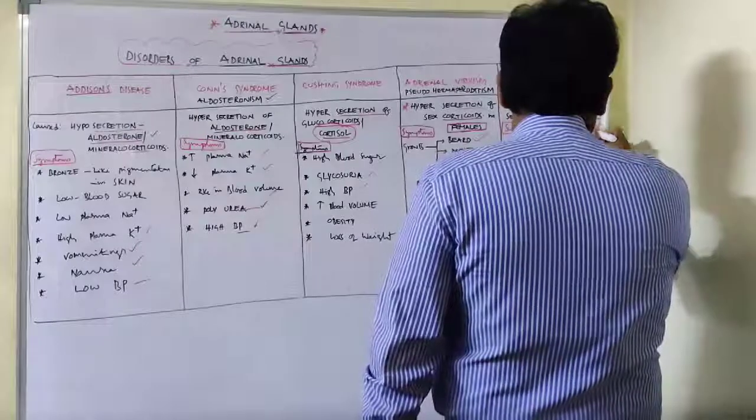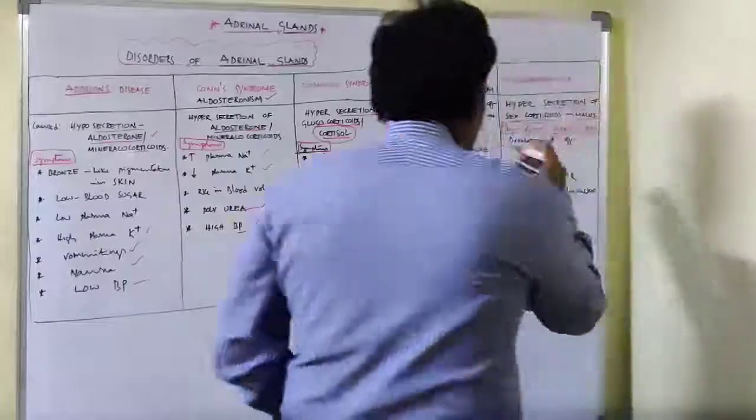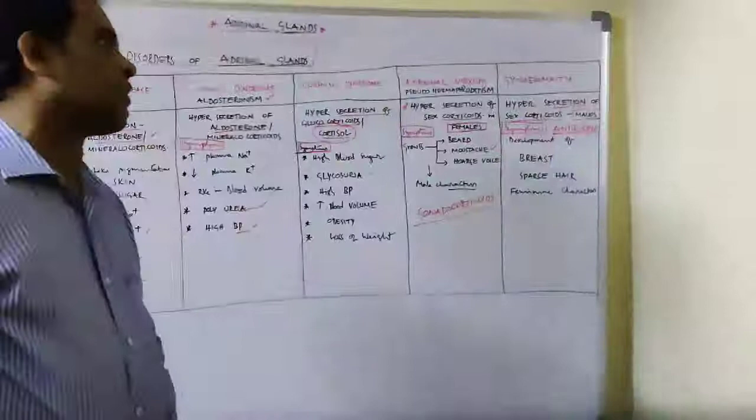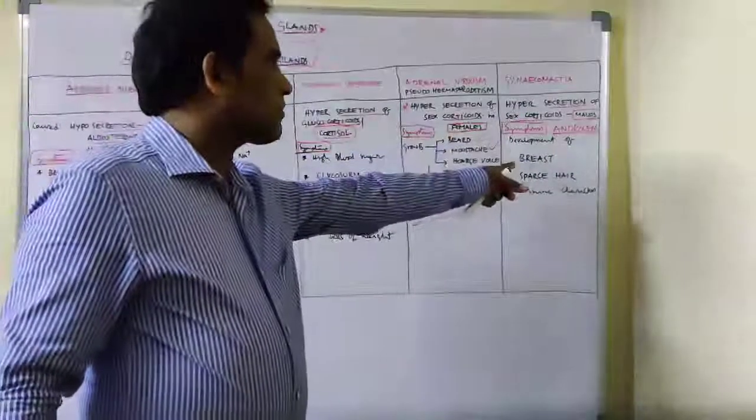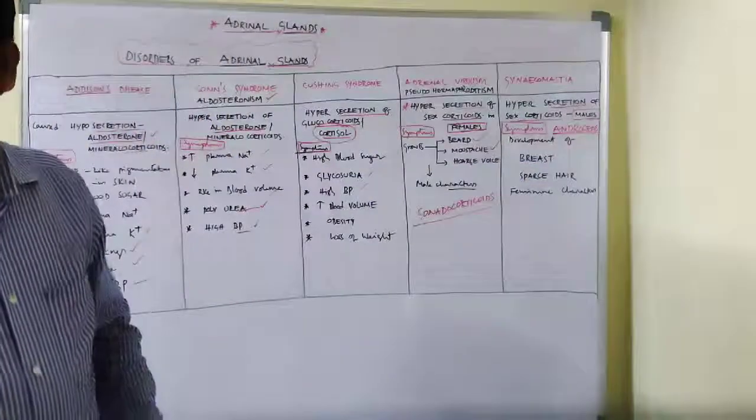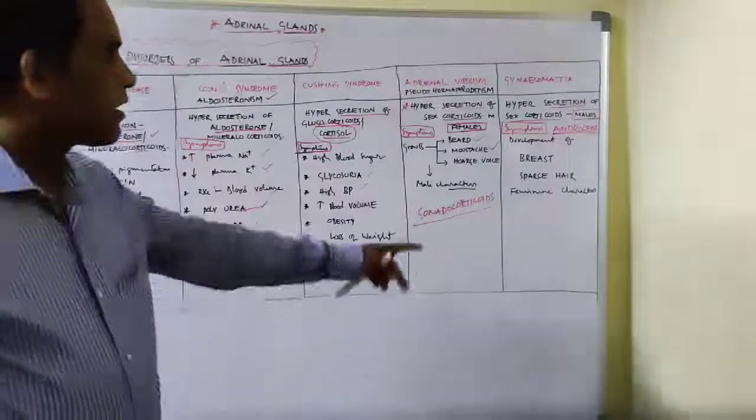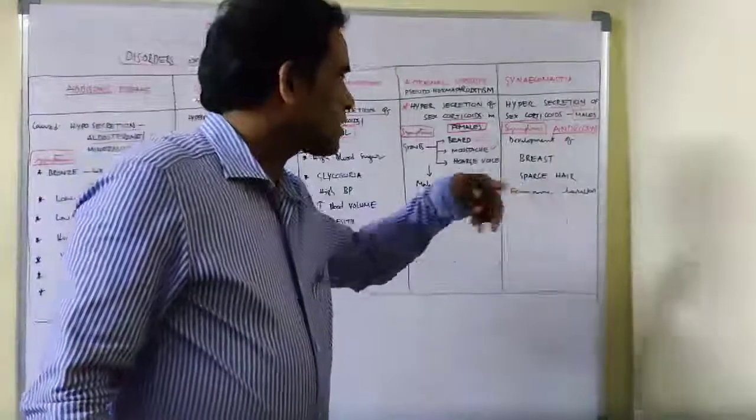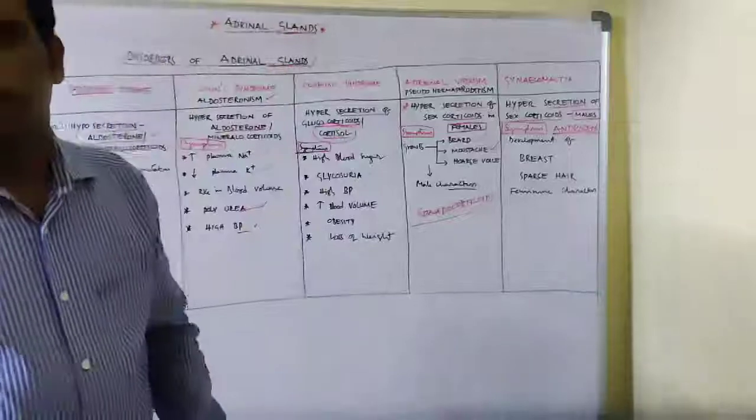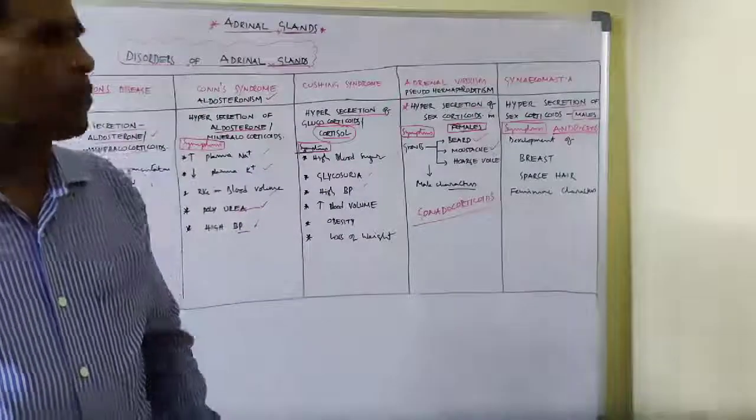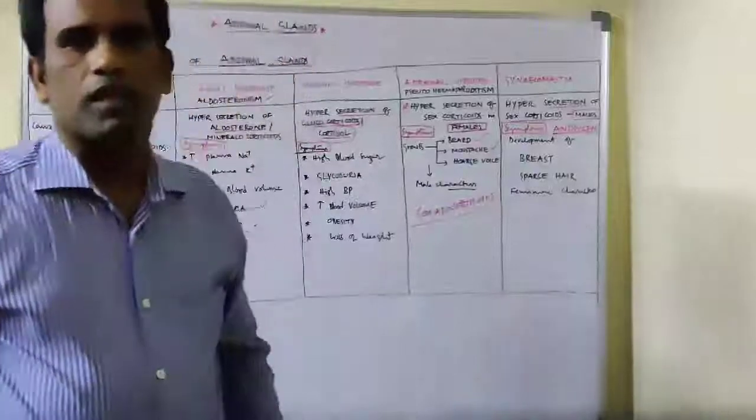Androgens are the male sex corticoids. The main symptoms are development of breasts in males, sparse hair meaning very less amount of hair grown on the body, and feminine characters.